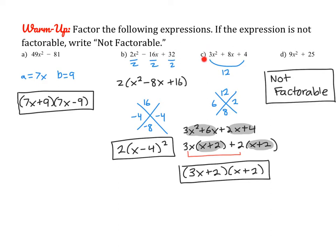For part C, since that A value is greater than 1, we need to use that grouping method. Remember, you multiply your A and C terms, and you say what multiplies to make 12 and adds to make 8 — that's 6 and 2. So we're essentially splitting up 8x into 6x plus 2x. Notice I put 6x next to 3x squared because they have something in common. Then you factor out the common factor of 3x from the first two terms, and the second two have a common factor of 2. You'll notice that you end up with the same factor, x plus 2, which means you can group the coefficients into the second factor.